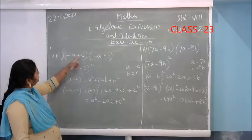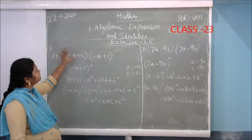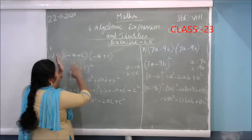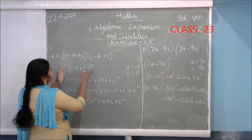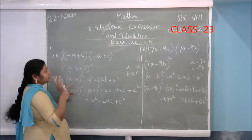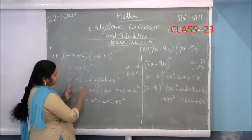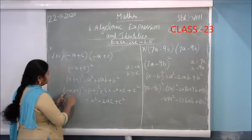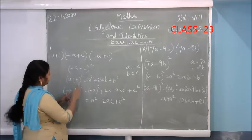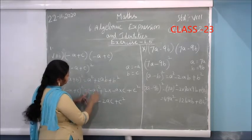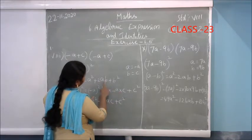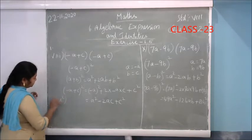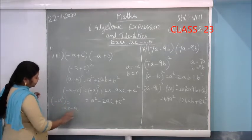The next sum is (-A+C)². The same expression is repeated twice. See the sign — minus A plus C, so the 4th square will come. This is (-A+C)², which is in the form (A+B)² — the first identity. Write: (A+B)² = A²+2AB+B². Here A is (-A) and B is C. So: (-A)² + 2×(-A)×C + C².